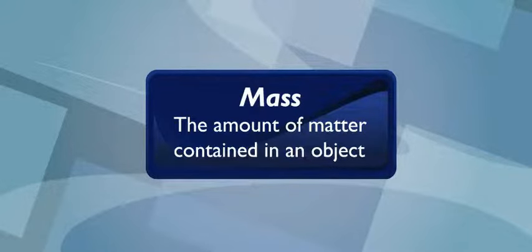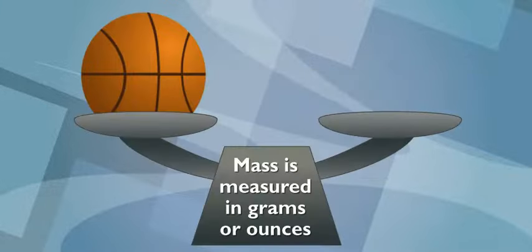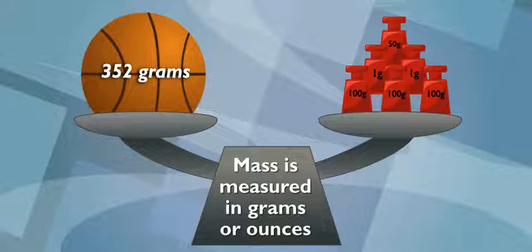Talk to me about mass. It's like this. Mass is how much matter is contained in an object. We measure it in grams or ounces, and unlike weight, it never changes. Of course. Why would it change?